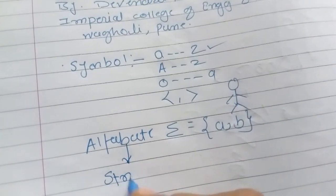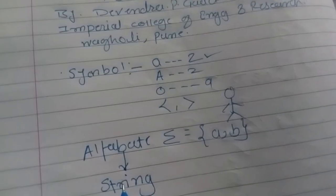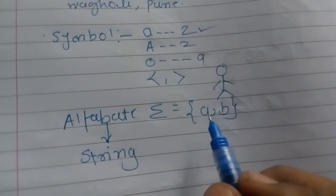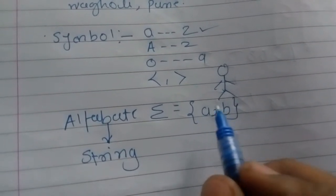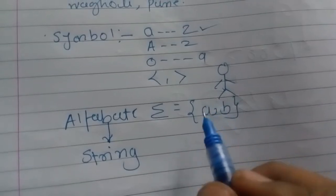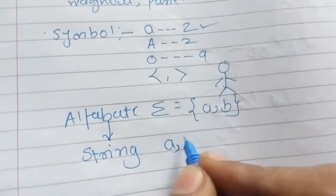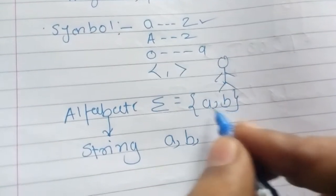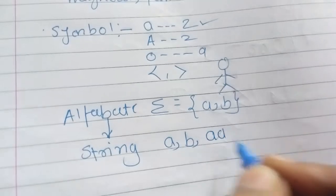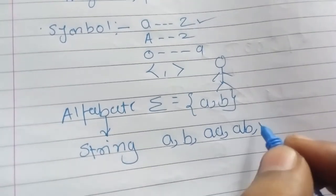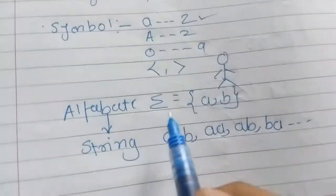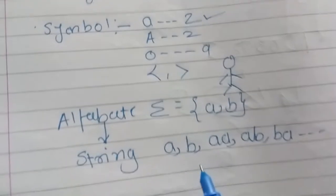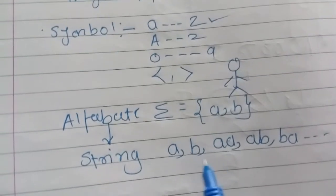The next concept is string. What exactly is a string? String is made up from the alphabets and is any combination of this alphabet. From the alphabet {a, b}, I can have a as a string, b as a string, or any combination like aa, ab, ba, and so on. Any combination of these two alphabets can be a string.